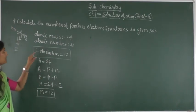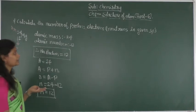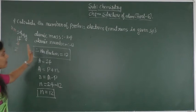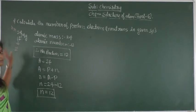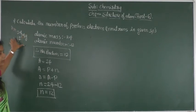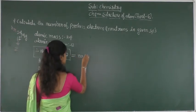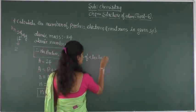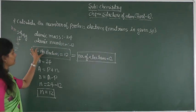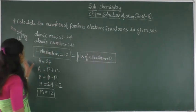Next, we find the total number of electrons present in magnesium. In a neutral species, the number of protons is always equal to the number of electrons. This is a neutral species, so the number of protons equals the number of electrons. Therefore, the number of electrons is 12. In total, magnesium has 12 protons, 12 neutrons, and 12 electrons.